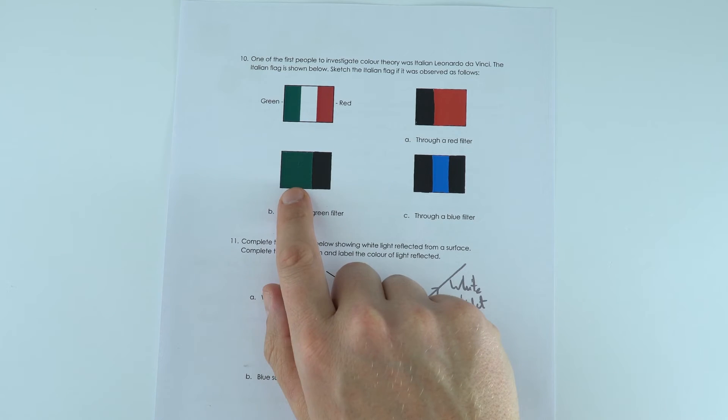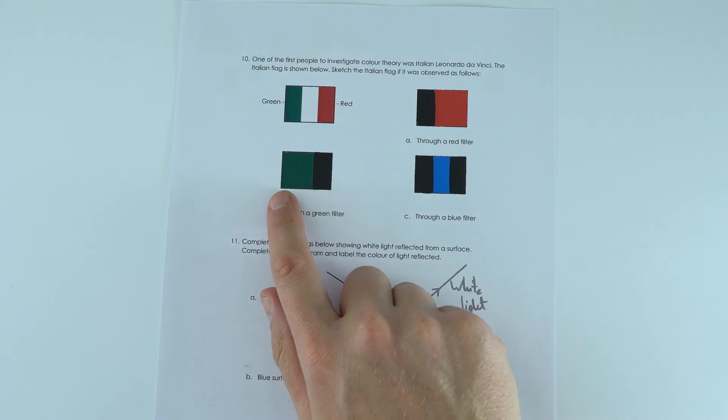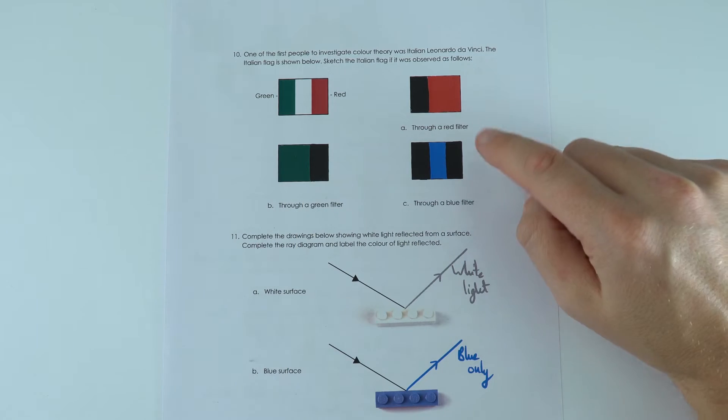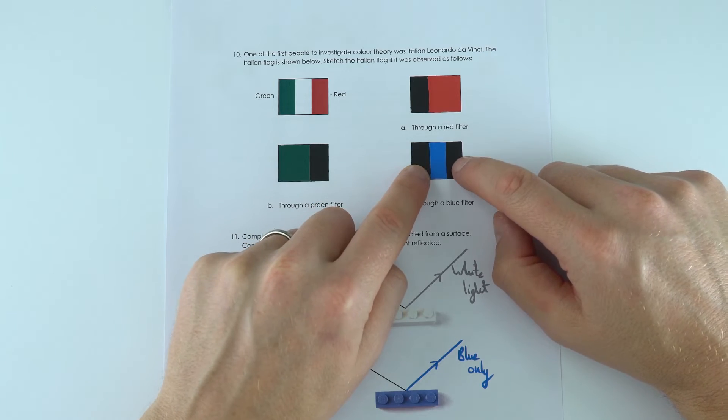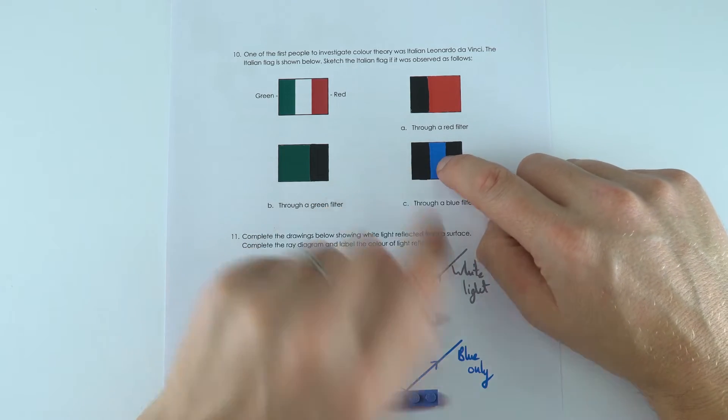When you look at it through a green filter this is what happens: we've got green, green and black. And through a blue filter, the blue filter absorbs both the green and the red light so they appear black, and it lets the blue part of the white light through.